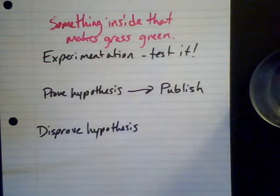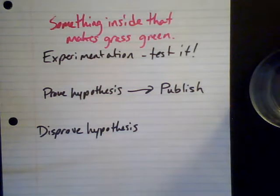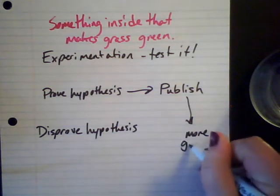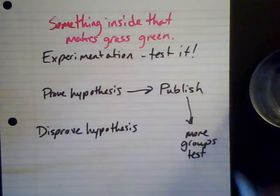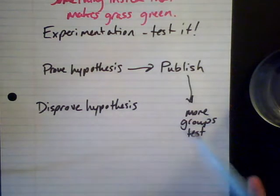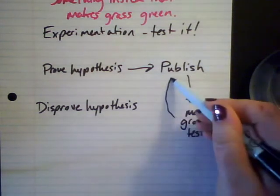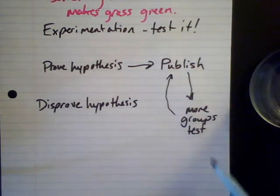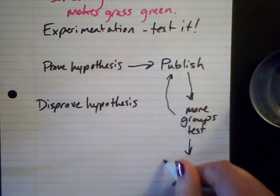The purpose of publishing any scientific writing or ideas is so that other people can test your hypothesis — so other people can do the experiments and show they get the same results over and over again. That's the scientific method: we publish, more groups test, other people test. Once we have this cycle going — long-term testing of these hypotheses with nobody able to disprove them — then the hypothesis becomes what is called a scientific theory.